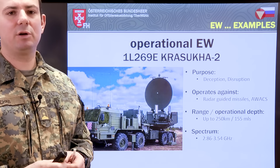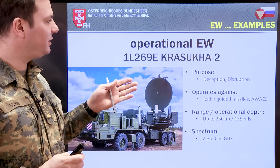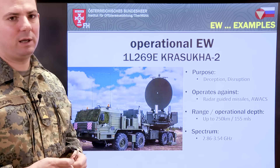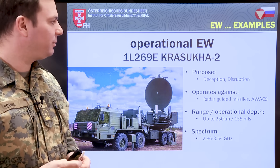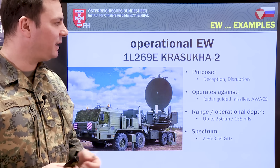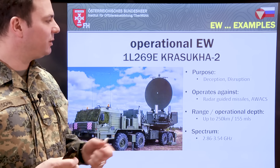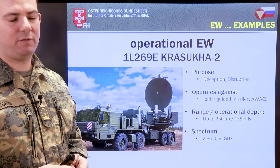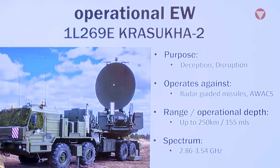Next is the Krasuke II system. Its purpose is deception and disruption, operating mainly against radar-guided missiles and AWACS systems. The operational range is up to 250 kilometers — around 155 miles — and its spectrum is from 2.86 up to 3.54 GHz.